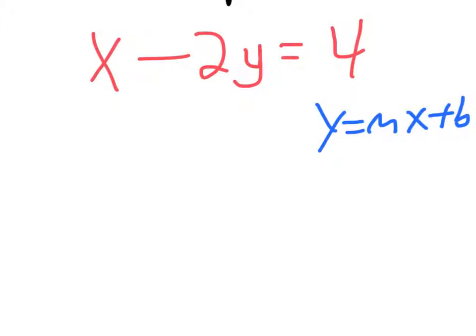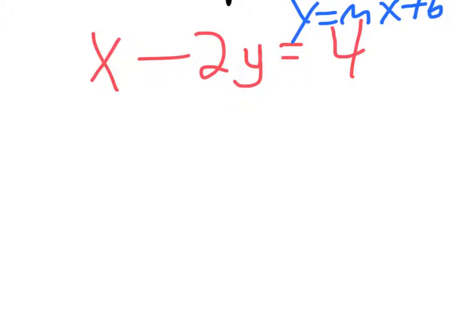So let's get the red equation in slope-intercept form. Where can I put this? I went right up there. We need to get y by itself, so this guy's got to go. I'm going to subtract x from both sides of the equal sign.